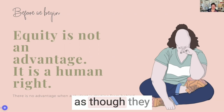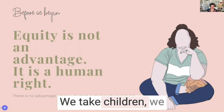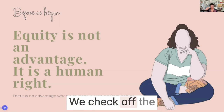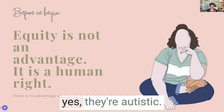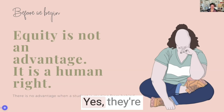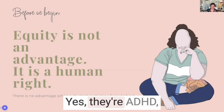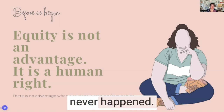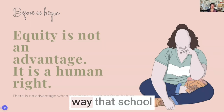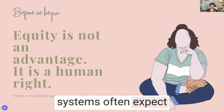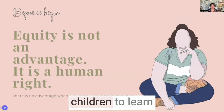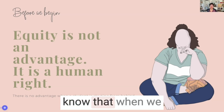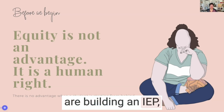We live in a world where everyone is expected to behave as though they are neurotypical. We take children, put them through an assessment and diagnosis process, check off the criteria and say yes, they're autistic, yes, they're demand avoidant, yes, they're ADHD — and then we send them off to school and pretend that never happened. School systems often expect our neurodivergent children to learn in the same ways.